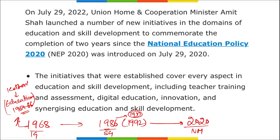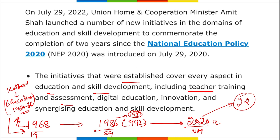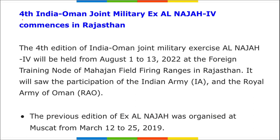The initiatives under the two-year celebration of NEP 2020 cover teacher training, assessment, digital education, innovation, and synergizing education and skill development. Some specific initiatives include the introduction of 75 Bharatiya games in schools, launch of the Kalashala initiative in 750 schools to promote local arts, partnership with Indira Gandhi Open University for upward mobility, and the Skill Hubs initiative.